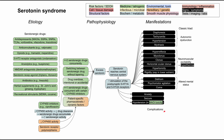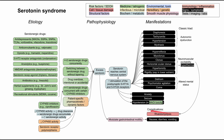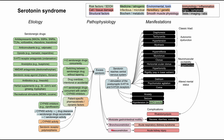Let's discuss complications of serotonin syndrome. Rhabdomyolysis can result from extremely high levels of neuromuscular excitability and hyperthermia, which can also damage the kidneys. Serotonin plays a role in modulating GI motility, resulting in GI symptoms like nausea, vomiting, and diarrhea. Serotonin can also cause bronchoconstriction leading to acute respiratory distress syndrome, and vasoconstriction leading to acute kidney injury — which rhabdomyolysis can also precipitate.